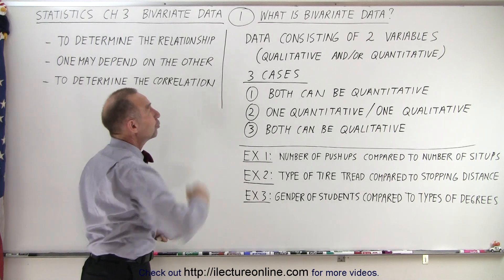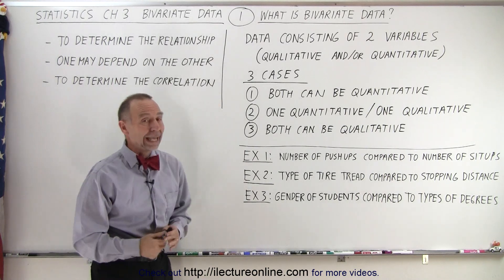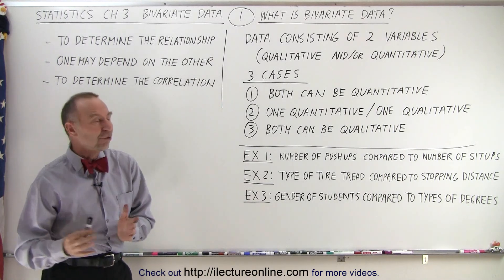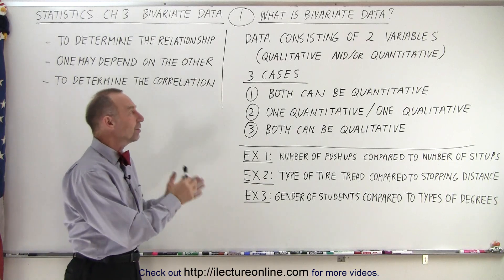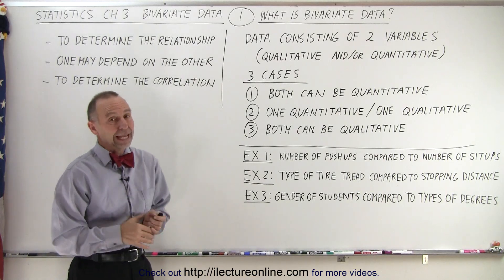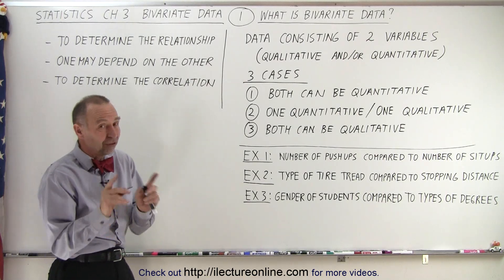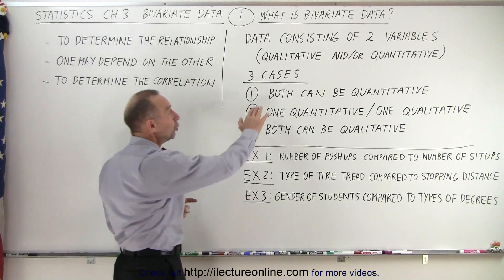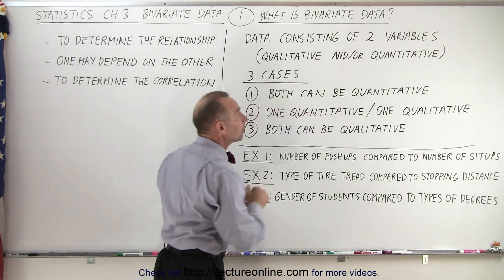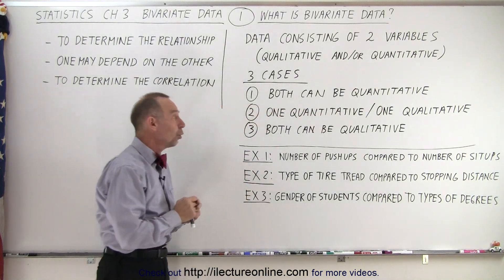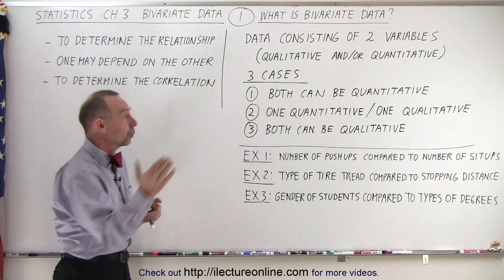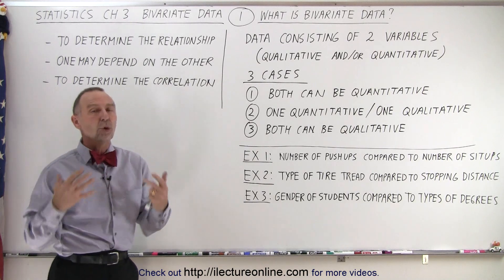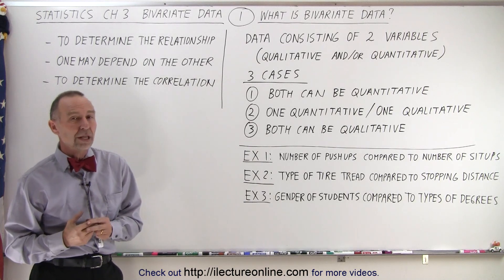Data consisting of two variables, and they can either be qualitative or quantitative. There could be three different cases: both could be quantitative, or one could be quantitative and the other could be qualitative, or both can be qualitative.